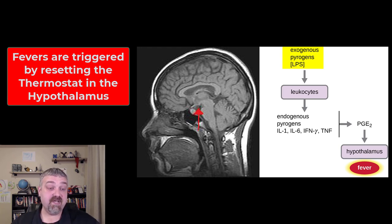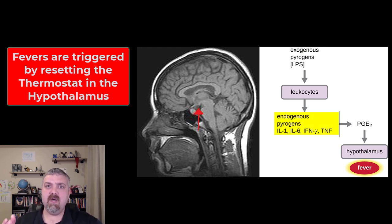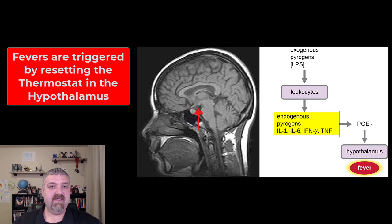Your immune cells are going to take up that LPS toxin, and they're going to produce the endogenous pyrogens — interleukin-1, interleukin-6, and several others, including tumor necrosis factor alpha. These are all examples of endogenous pyrogens.